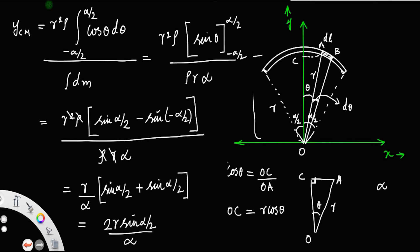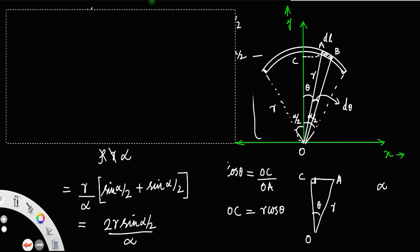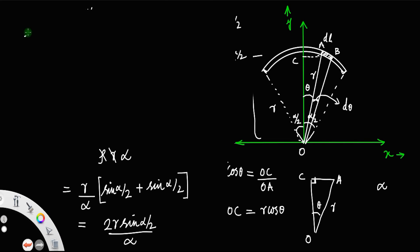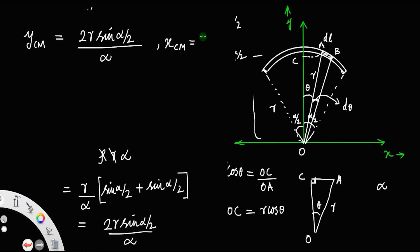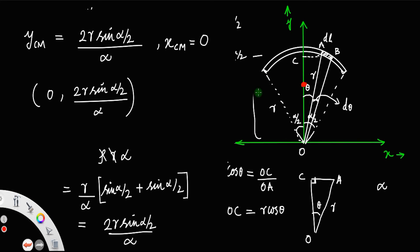So y_cm equals 2R sin(alpha/2) divided by alpha. Since the arc is symmetric about the y-axis, x_cm equals 0. The coordinates of the center of mass are (0, 2R sin(alpha/2) / alpha), located at a distance 2R sin(alpha/2)/alpha from the origin along the y-axis.